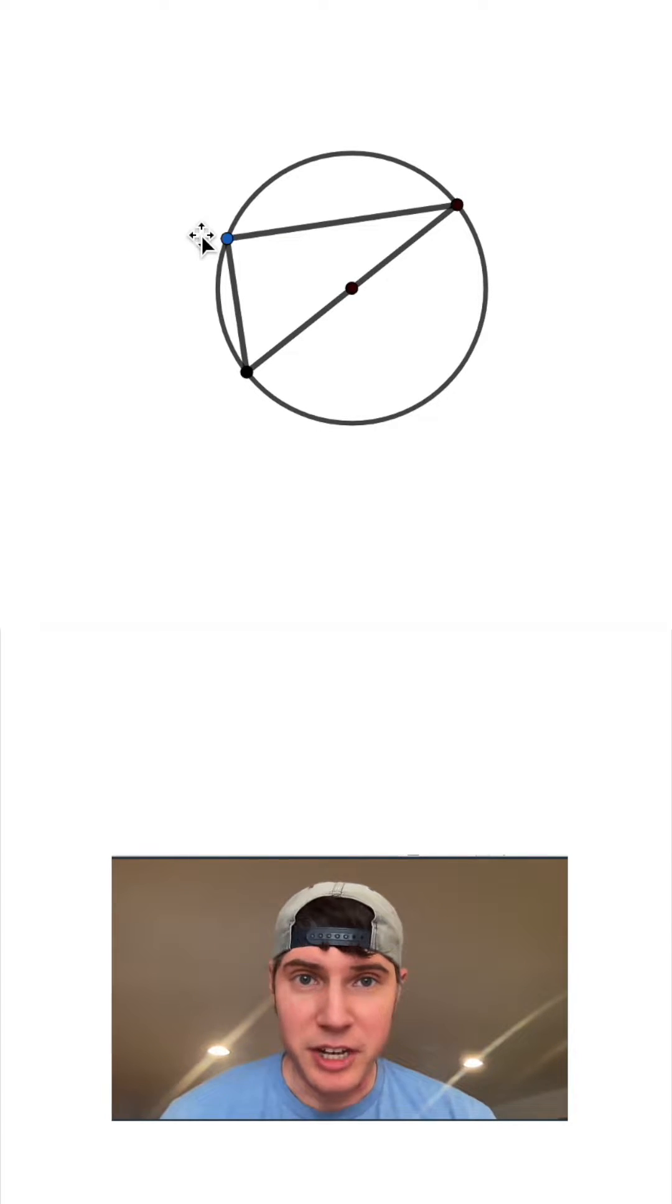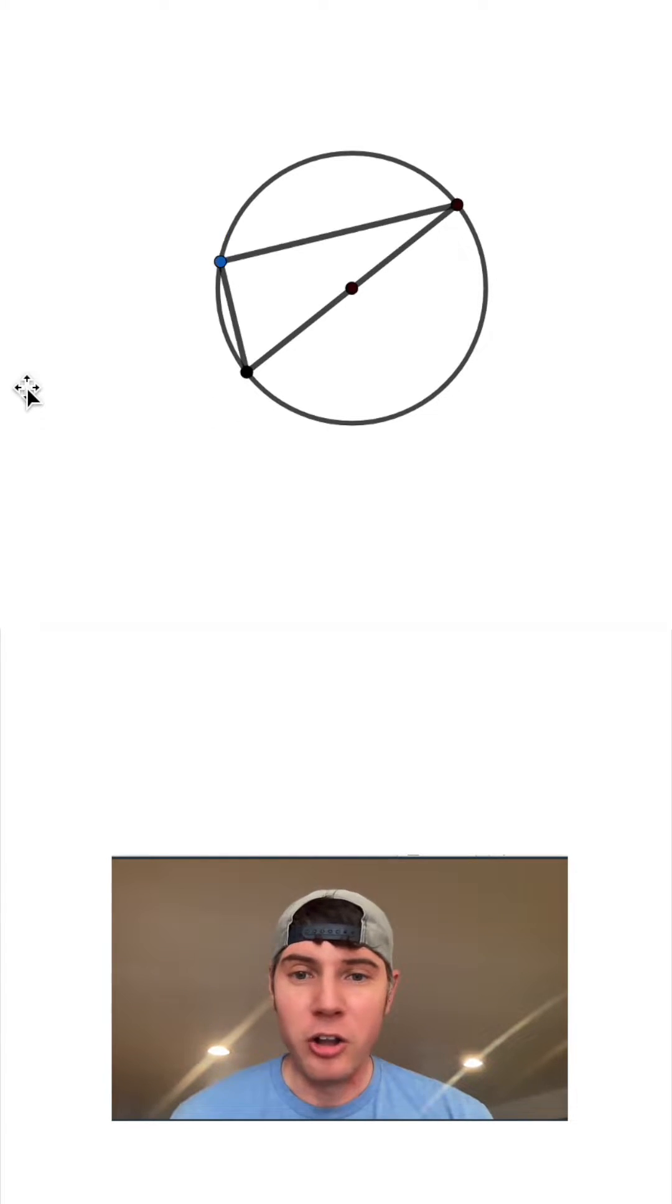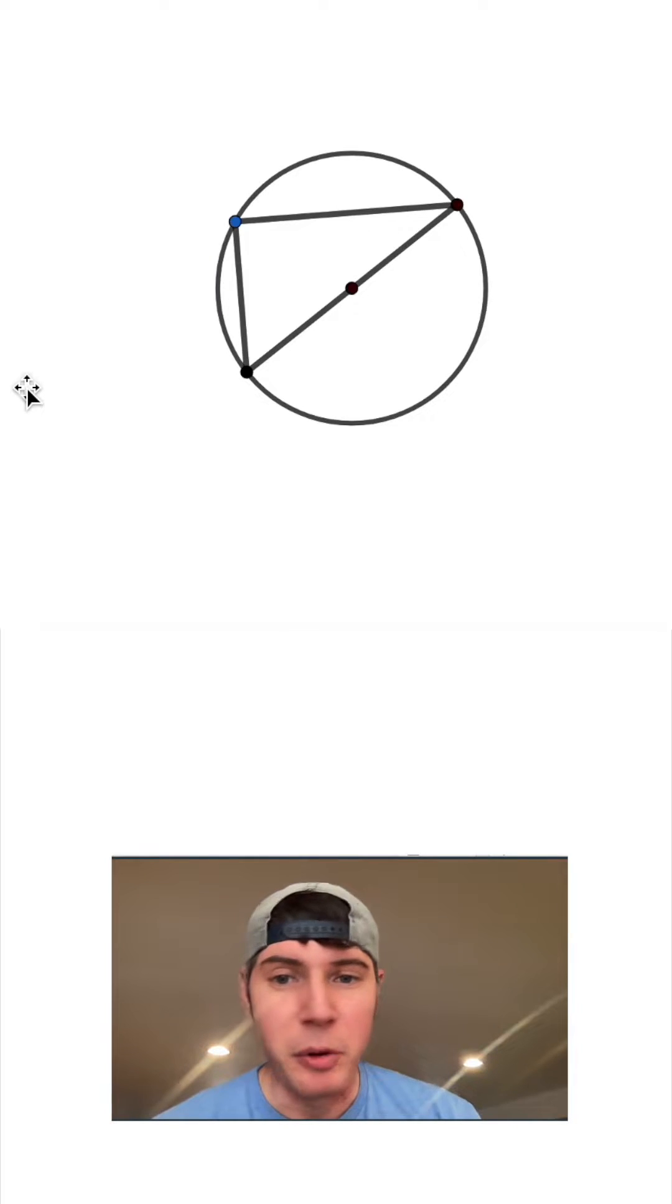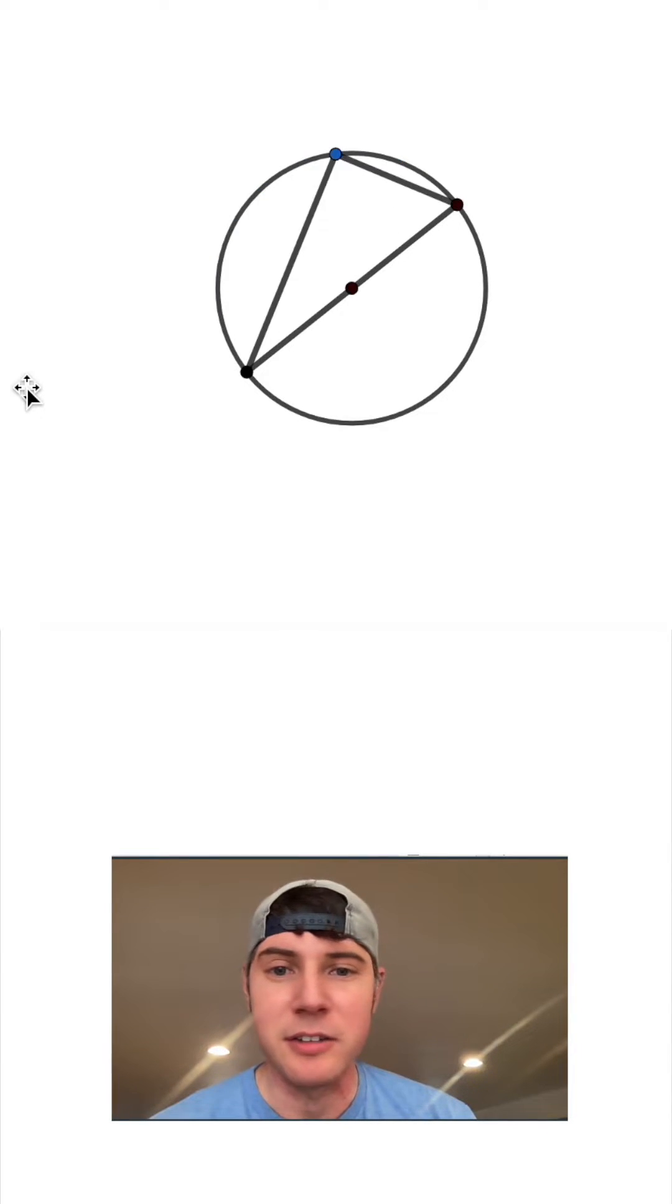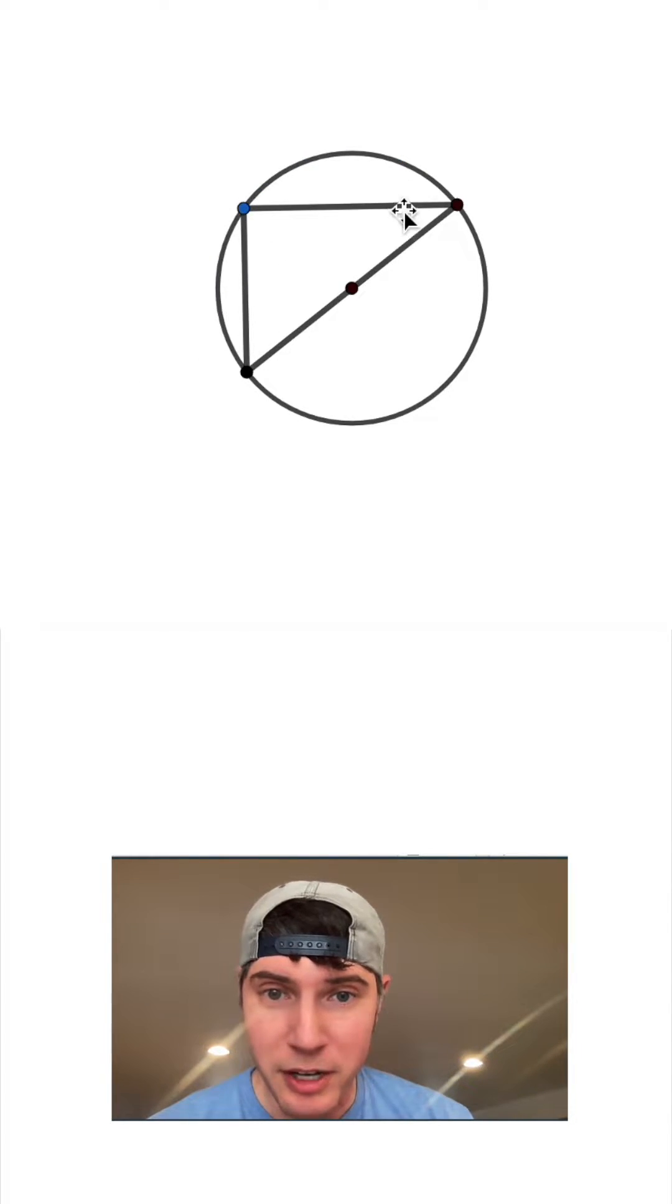Whenever this point or vertex is on the circumference of the circle and the longest side of the triangle is the diameter, it will always form a right triangle. All of these are right triangles. No matter where I put the point, they're all going to be right triangles. You can even tell right here it really looks like a right triangle because it's perfectly horizontal and vertical that it's a right angle. And we can prove this.